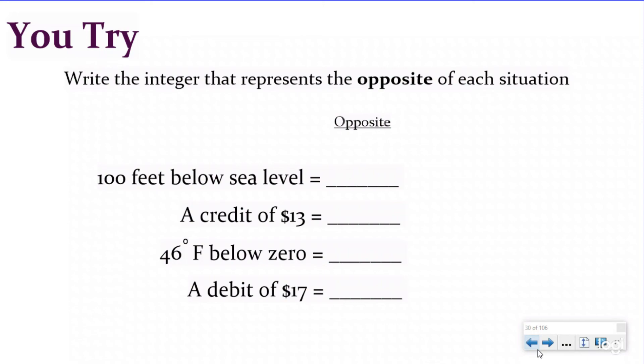Let's check your mastery. So it says write the integer that represents the opposite of each situation. Well, the first thing we have to do is write down the integer for the situation. So it says 100 feet below sea level, that's going to be a negative 100. So the opposite of negative 100 would be 100 feet above sea level, a positive 100.